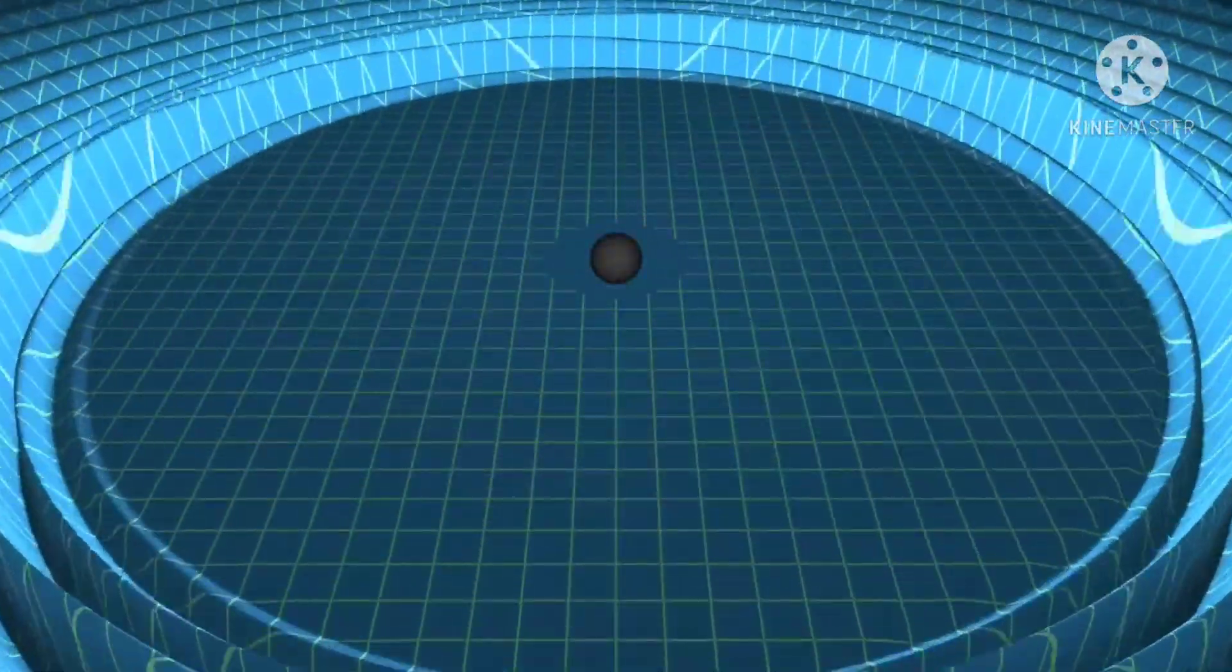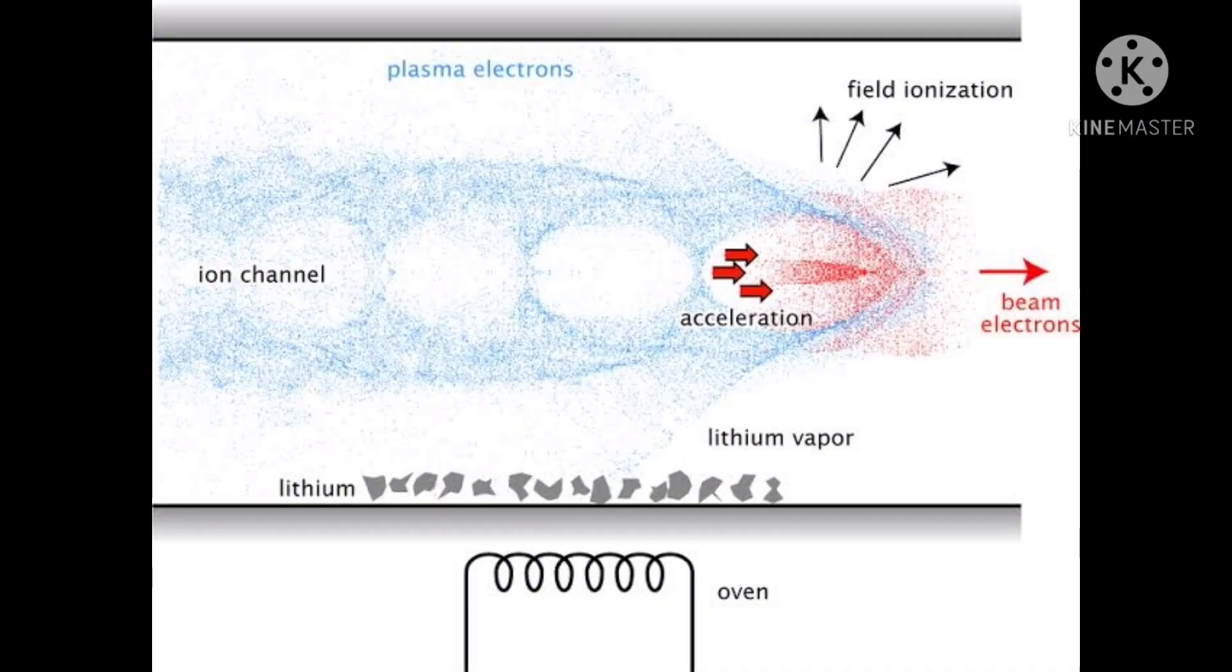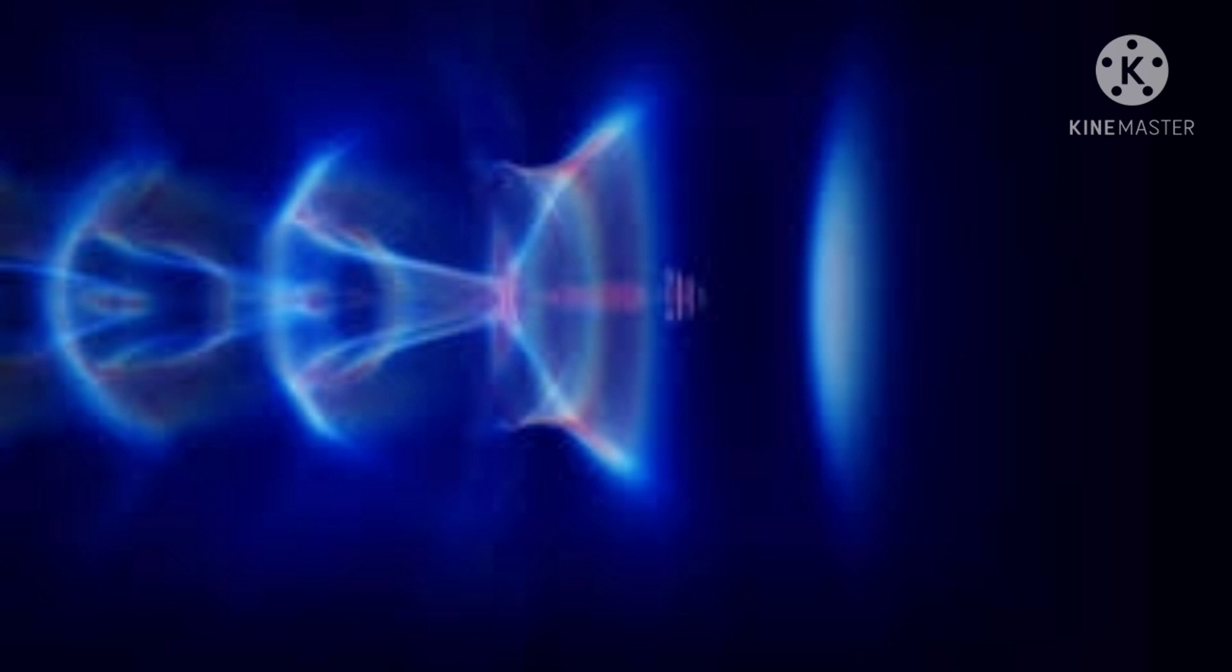In analogy to an accelerating electric charge producing electromagnetic waves, accelerated masses in a relativistic field theory of gravity should produce gravitational waves. Gravitational waves transport energy as gravitational radiation, a form of radiant energy similar to electromagnetic radiation.